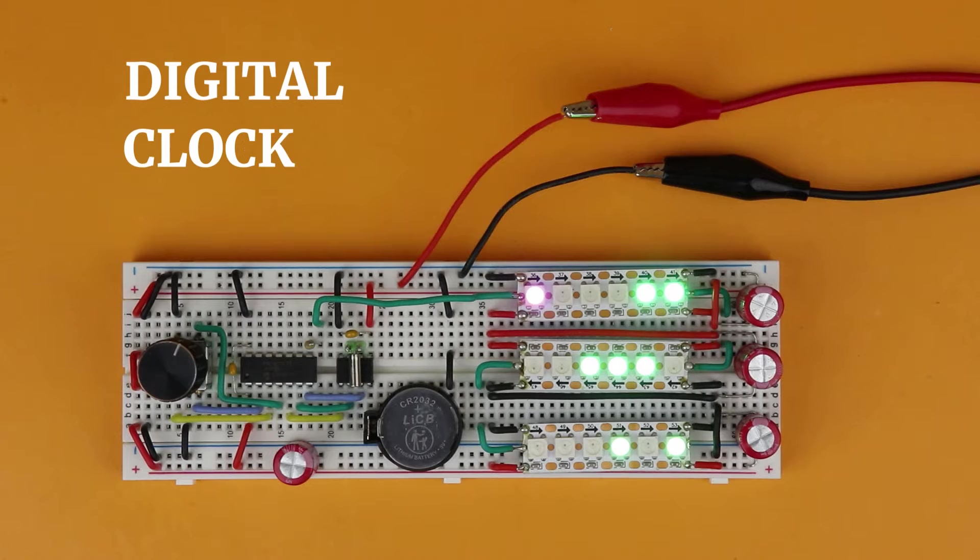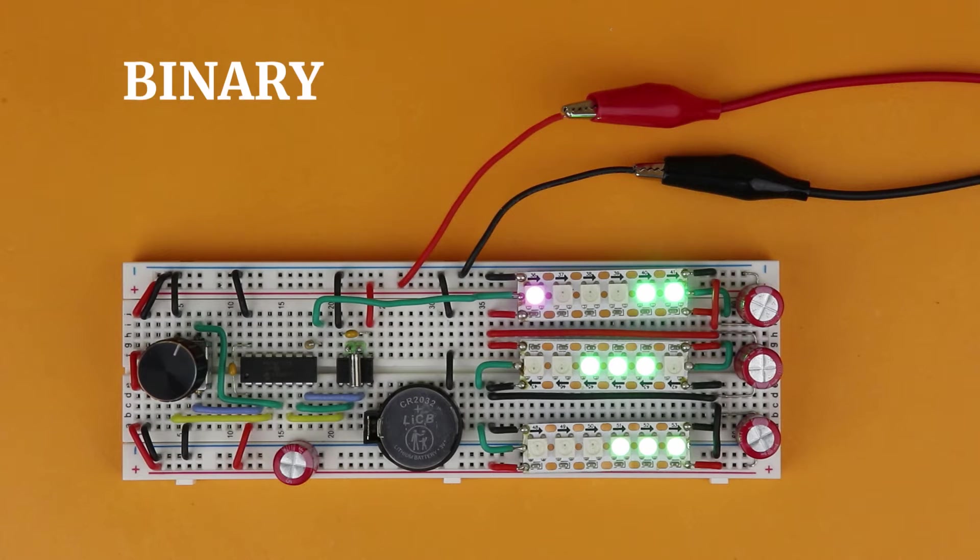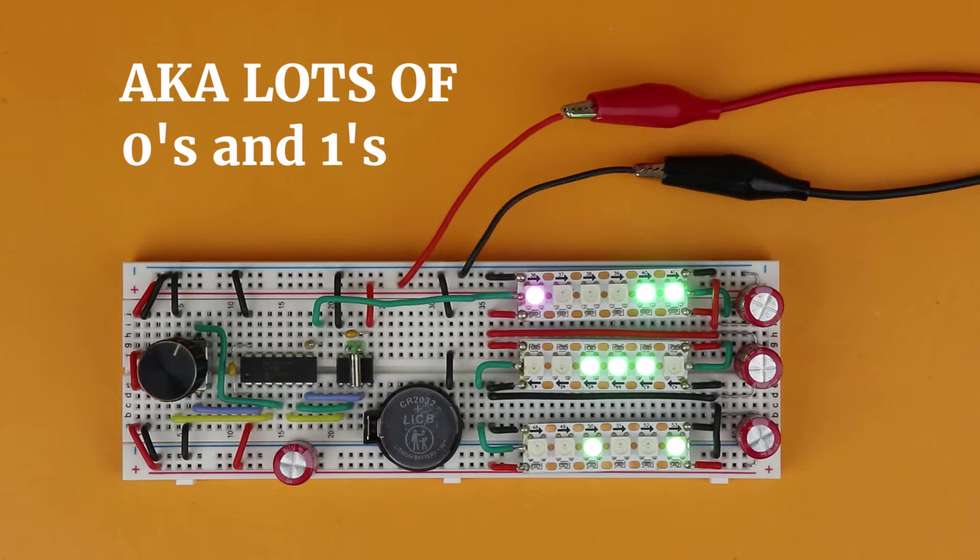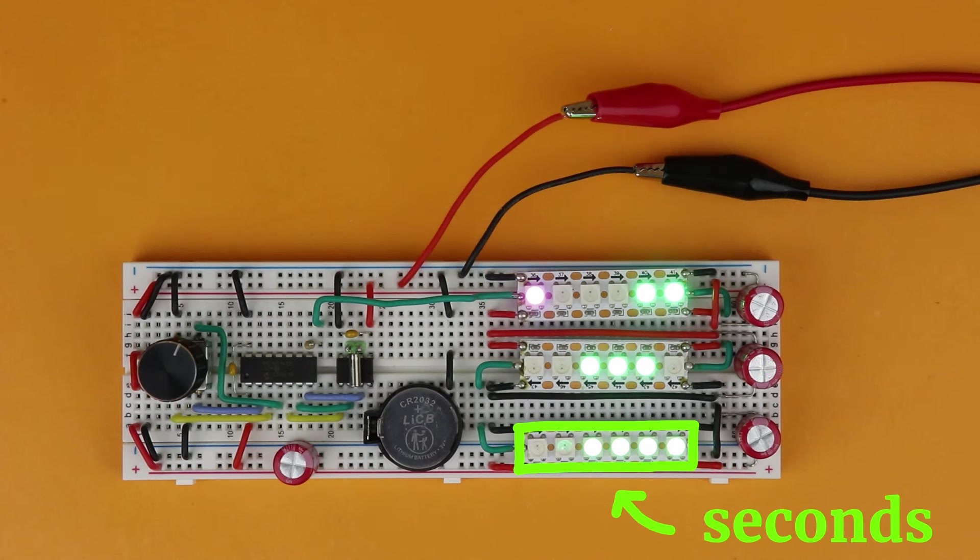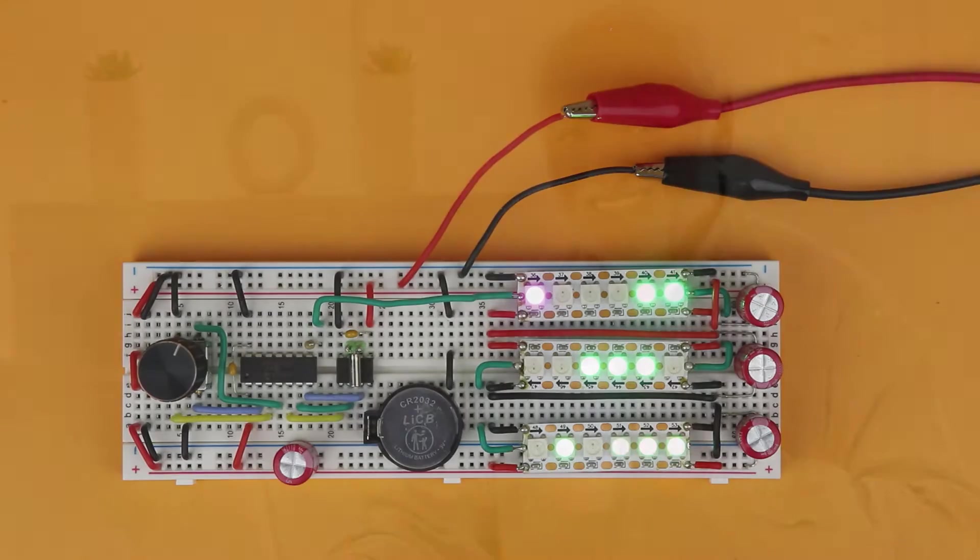This here is a digital clock and it shows the time by using binary numbers. Right now, for example, it shows 3:14 p.m. It takes some practice to read it fast enough, especially with the seconds blinking on and off more quickly, but I think it's a very unique look that can also be a lot of fun.